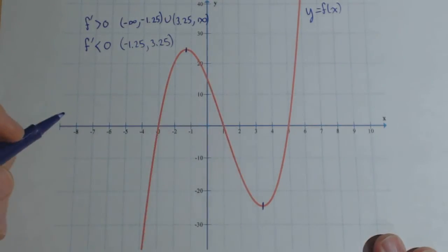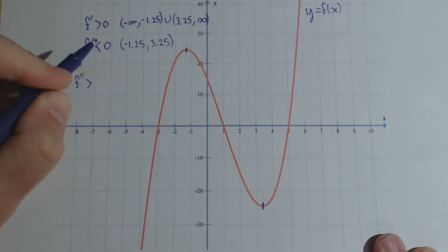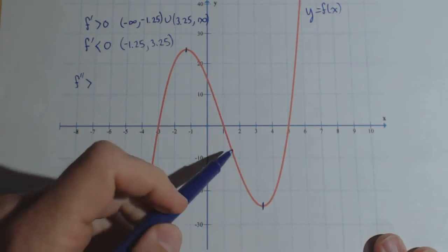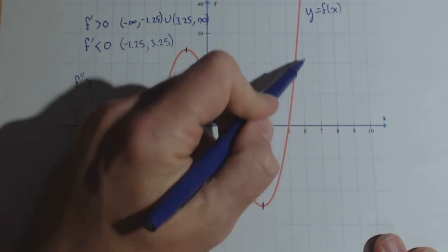Now let's talk about the second derivative. Remember what the second derivative talks about - it talks about concavity. So the second derivative is going to be positive wherever the graph is concave up, or wherever it opens up. So that's going to be right in here.